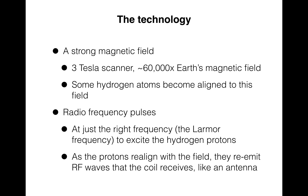When you put hydrogen atoms into a strong magnetic field, some proportion of them become aligned to the field. If you pulse in radiofrequency pulses at just the right frequency — the Larmor frequency — that allows the pulses to excite the hydrogen protons. As these protons become excited and then realign with the magnetic field, they re-emit radiofrequency waves that a coil outside of the bore receives like an antenna.